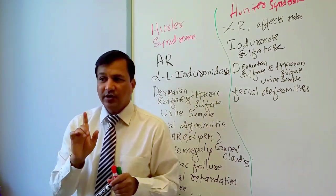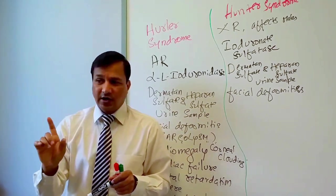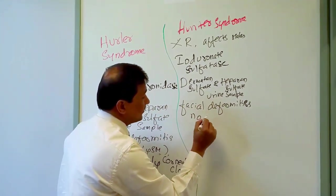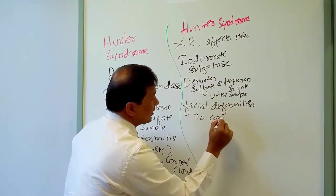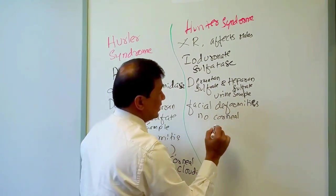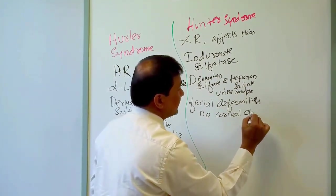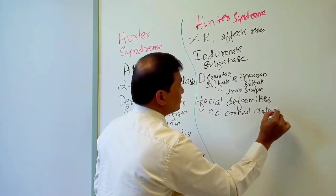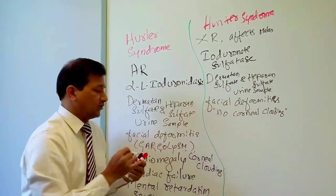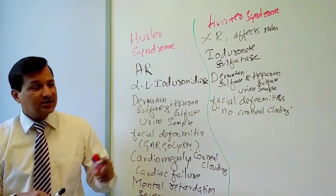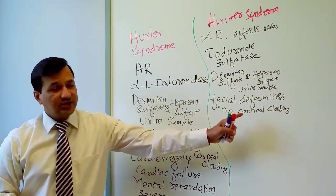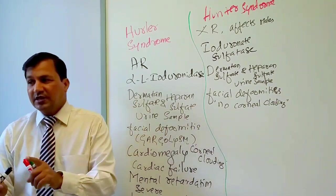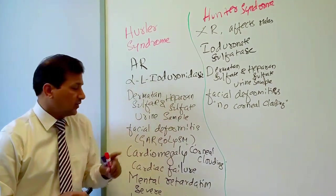The key differentiating point is that there is NO corneal clouding in Hunter syndrome, whereas in Hurler syndrome you do see corneal clouding. All other facial deformities described for Hurler syndrome are also seen in Hunter syndrome.